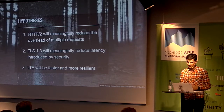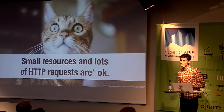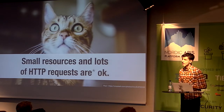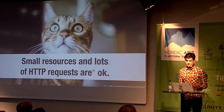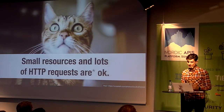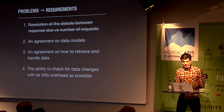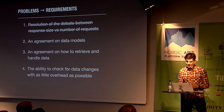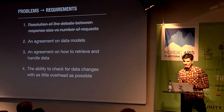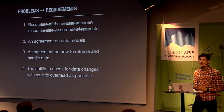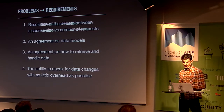This was important because it allowed us to come to an agreement that small resources and many HTTP requests can be okay — if the responses are small, the hit for retrying requests is lower and the faster the response completes, there's less exposure to it being interrupted. Once we removed our fear of small requests, we could work on agreeing to define a common data model for resources, normalizing data just like you might for a database.